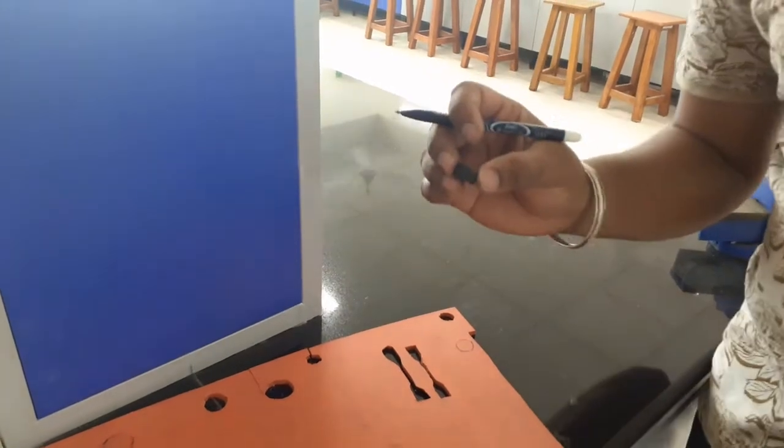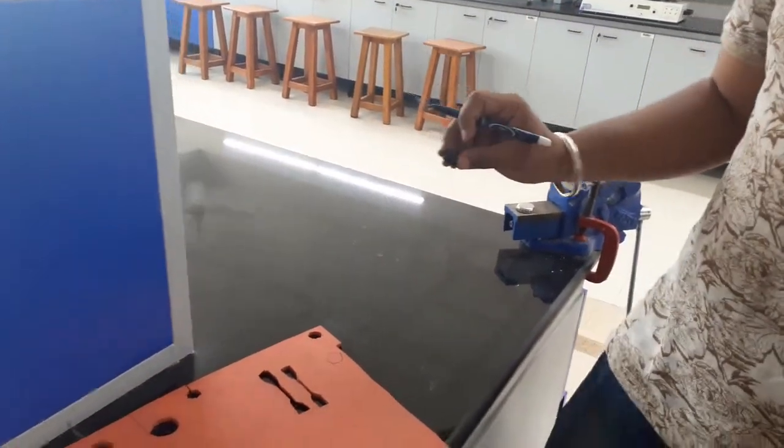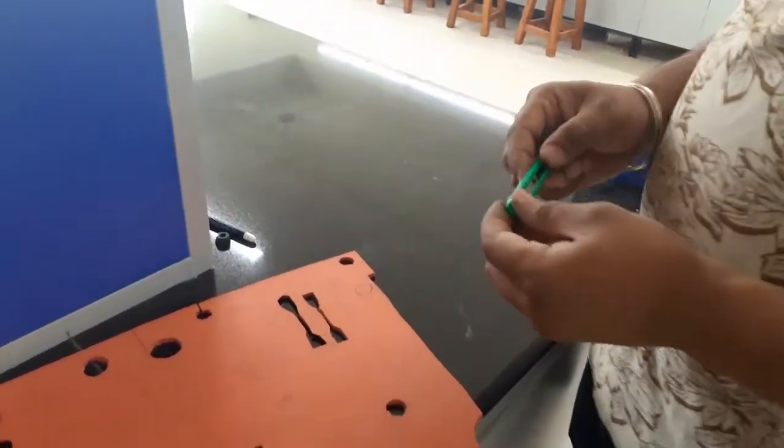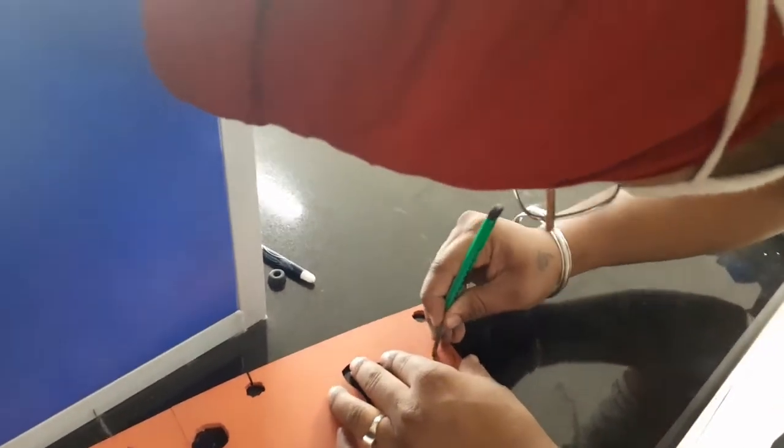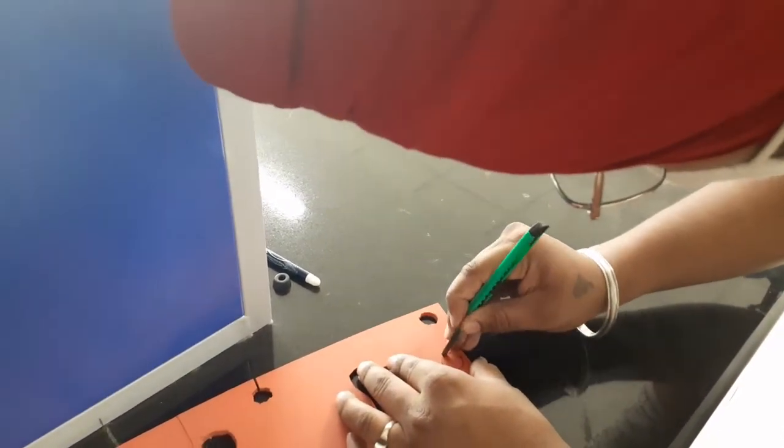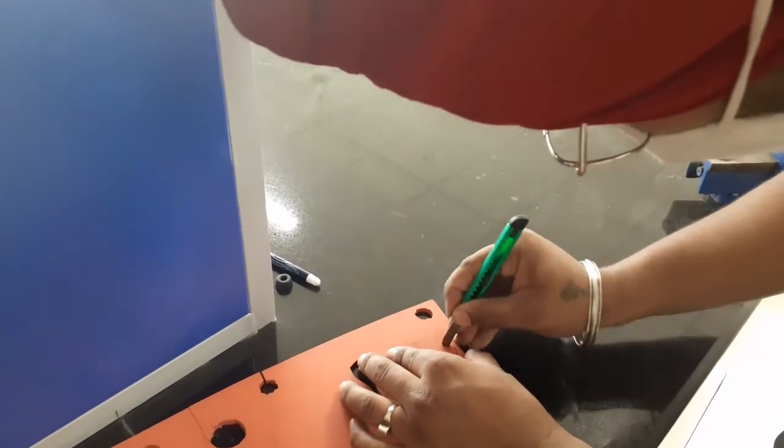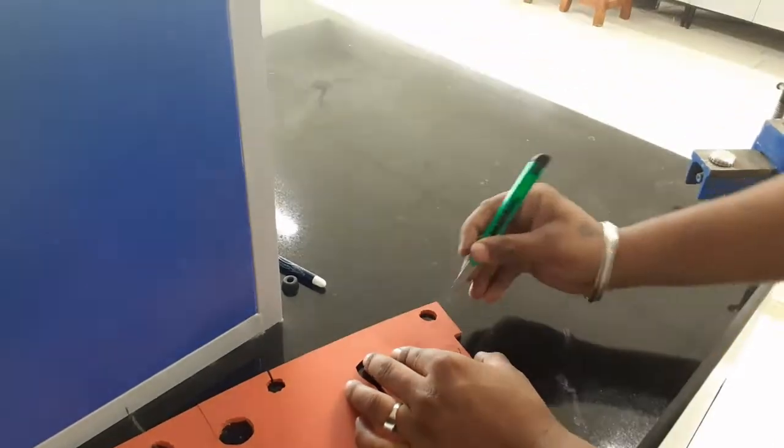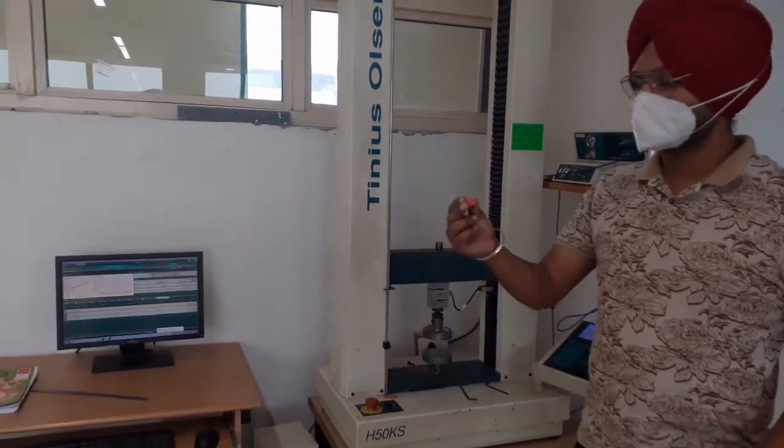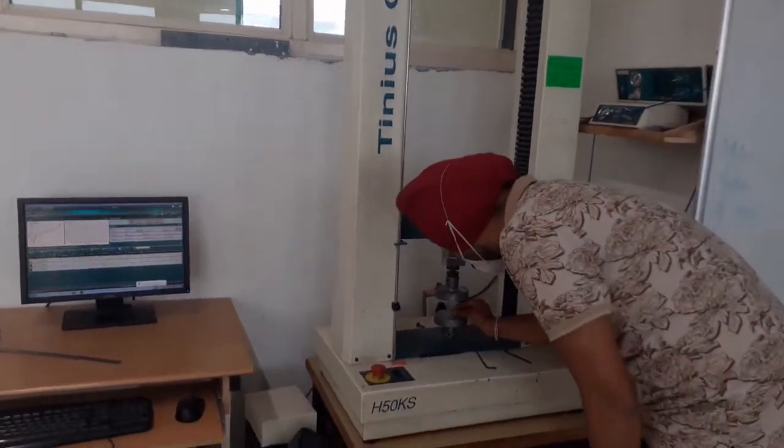We have the specimen of same diameter so we use it for the cutting purpose. By the help of this cutter we cut our sample. This is our sample we cut from the sheet, and now we place the sample in the center of this flat surface.